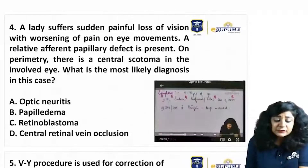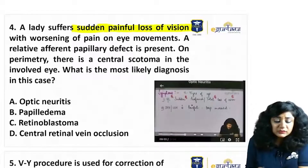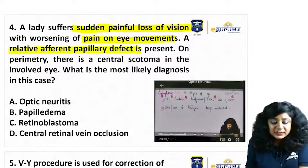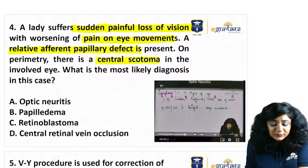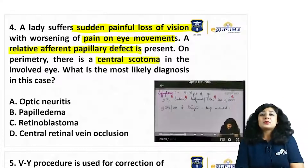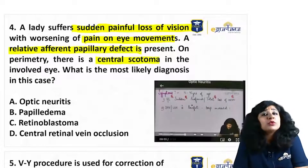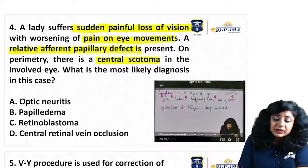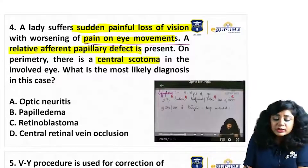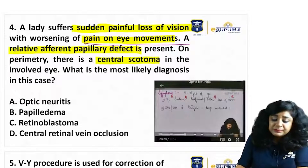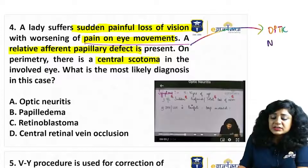The next question is a lady suffering from sudden painful loss of vision with worsening of pain on eye movements. RAPD and central scotoma are also present. These are good clues towards the diagnosis. The sudden painful loss of vision and pain on ocular movement points towards the diagnosis of optic neuritis.